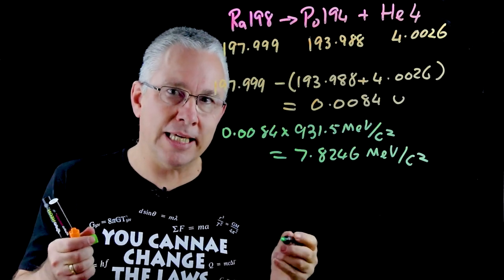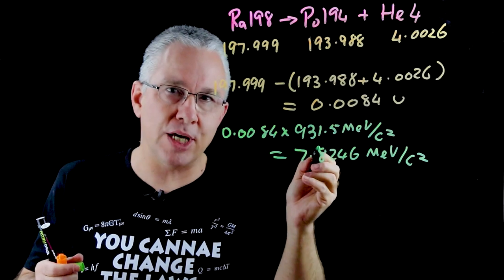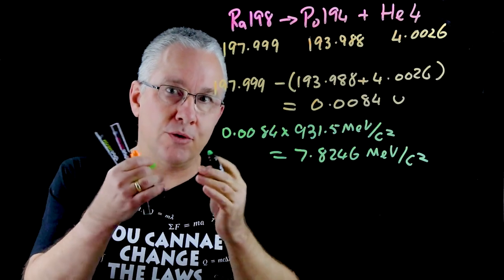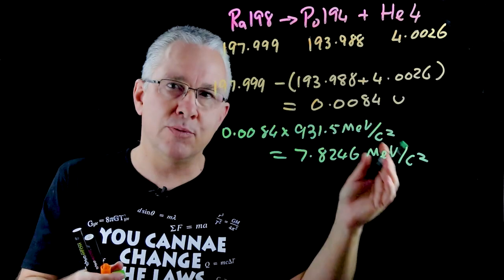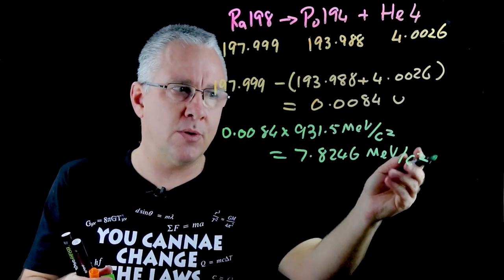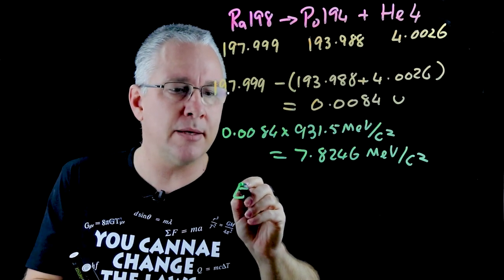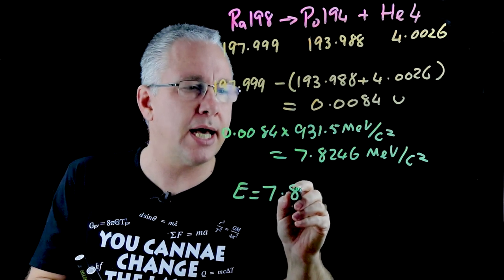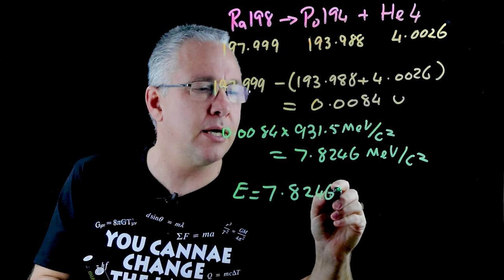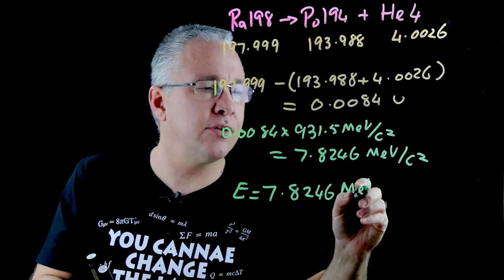But the nice thing is is that if you want to convert how much energy that is in terms of when through e equals mc squared is we simply multiply this by c squared. Well that's just dropping off my c squared. So the energy you end up getting is equal to 7.8246 mega electron volts.